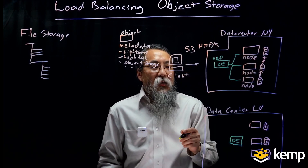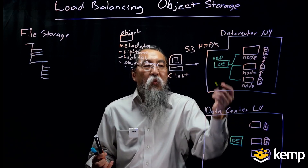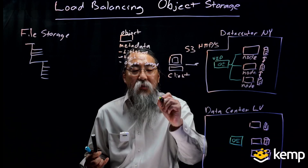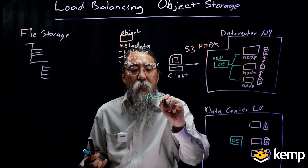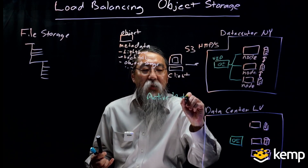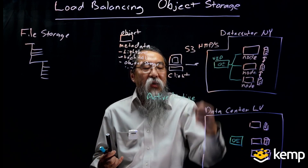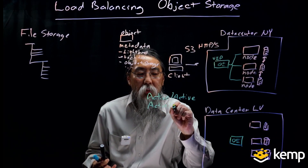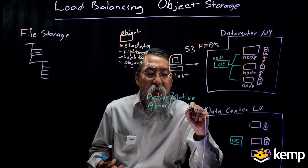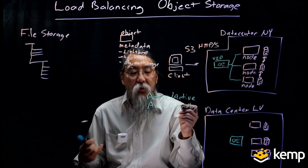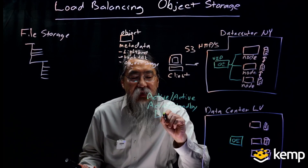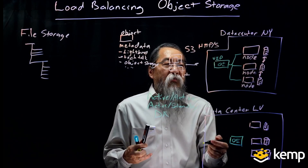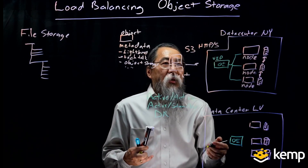So now I have my two data centers. When we have two data centers, there are usually two approaches: one is active-active, where both data centers are live at the same time and we can connect to both and they're functional. The other one is active standby, also commonly known as disaster recovery. So I can create an active-active or disaster recovery setup with my object storage solution using load balancers.